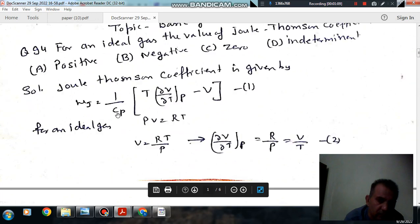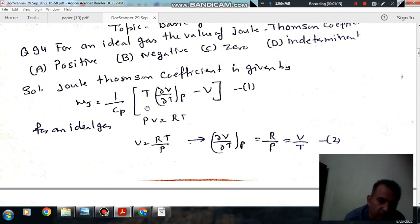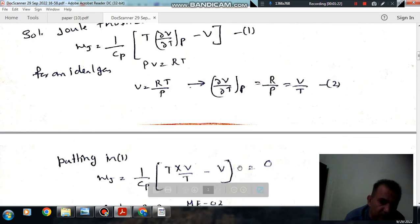zero. So the answer is zero. This is a general formula for any gas, whether it is ideal or non-ideal gas. So here if you put the value according to ideal gas equation, you get Joule-Thomson coefficient as zero.